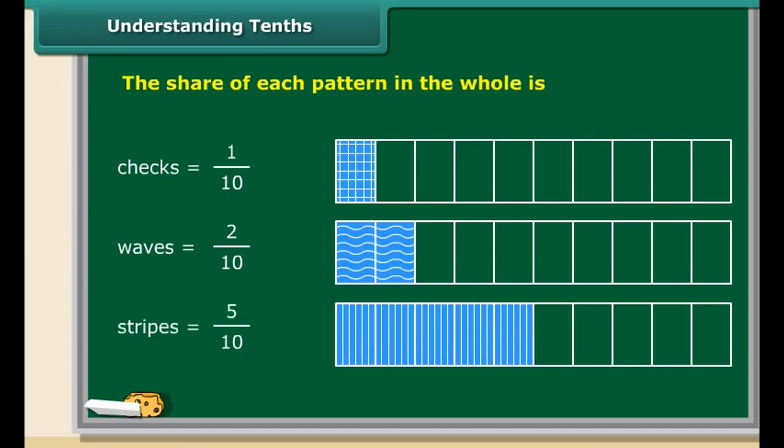In all these cases, we express the share of the pattern blocks to the total blocks as a fraction with denominator 10. Such fractions are called tenths. Thus, while one part is 1/10, two parts show 2/10, and five parts represent 5/10. One tenth can be written as 0.1 in decimal notation, two tenths as 0.2, and five tenths as 0.5.